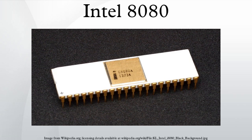A key factor in the success of the 8080 was the broad range of support chips available, providing serial communications, counter-timing, input-output, direct memory access, and programmable interrupt control among other functions. These included the 8251 communication controller, 8253 programmable interval timer, 8255 programmable peripheral interface, 8257 DMA controller, and 8259 programmable interrupt controller.